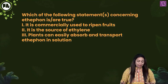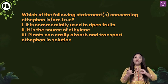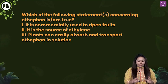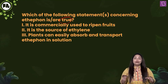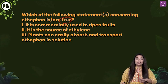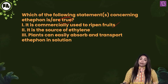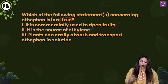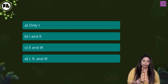Which of the following statements concerning ethephon are true? One: it is commercially used to ripen fruits — yes, ethephon is used for commercial ripening. Two: it is a source of ethylene — yes, ethephon is used as a source of ethylene. Three: plants can easily absorb and transport ethephon in solution — absolutely yes, that is one of the biggest advantages of ethephon. So all three statements — one, two, and three — are true. The answer is option D.